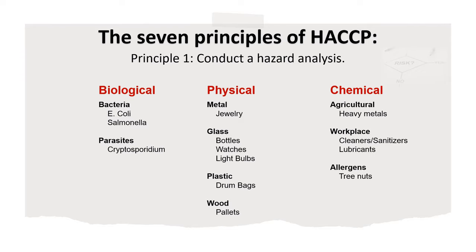Principle 1: Conduct a hazard analysis. This is where the processes are evaluated and where we identify where hazards can be introduced. All hazards are assessed and categorized into three groups: biological, physical, and chemical hazards. A general definition of a hazard as related to food safety is conditions or contaminants that can cause illness or injury.